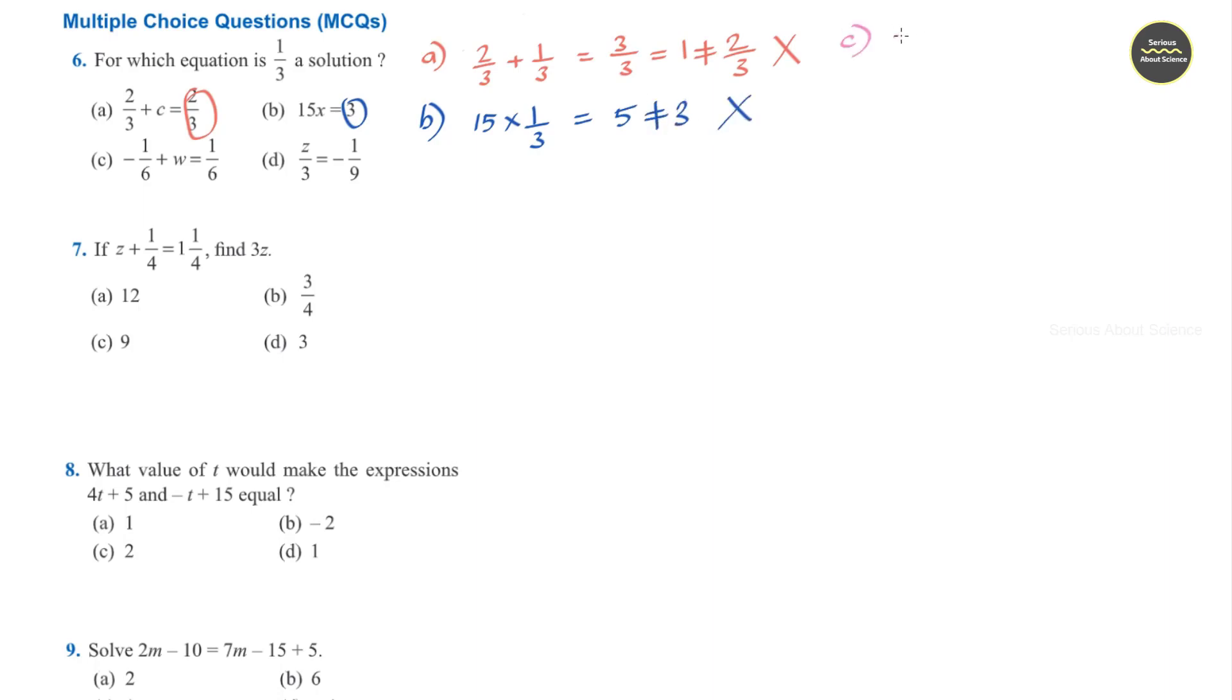Option c, -1/6 plus w. Instead of w we can write 1/3. Now here the LCM is 6, so it becomes -1 plus 2. -1 plus 2 is 1, that can be written as 1/6, and here it is written as equal to. So option c is the answer here. You can mark option c.